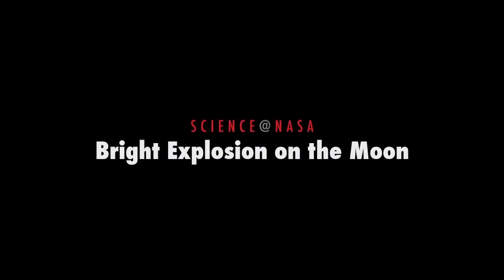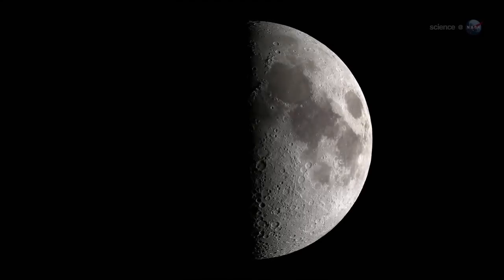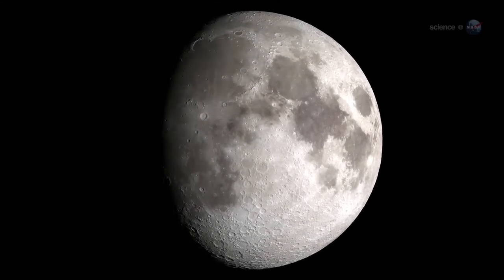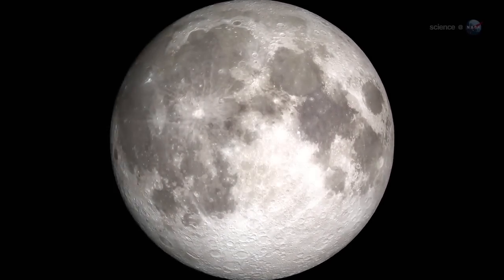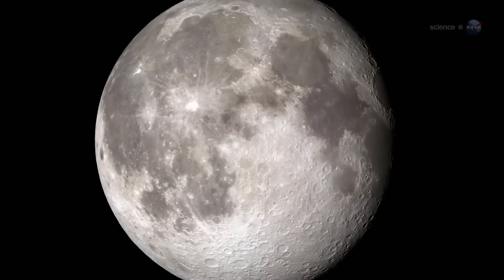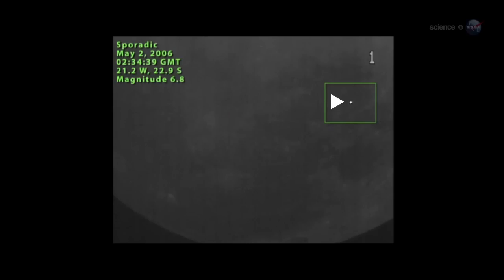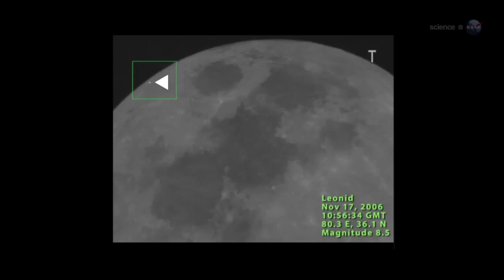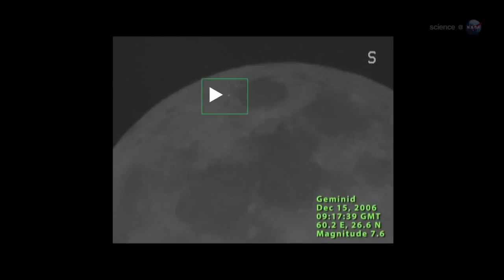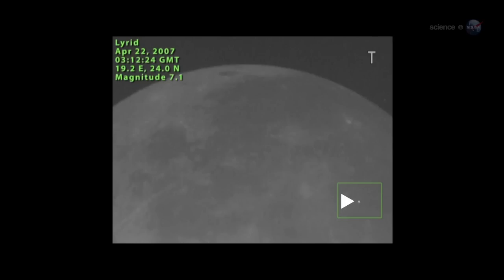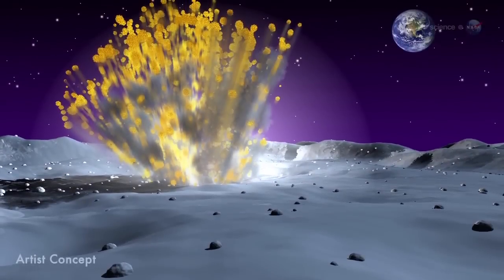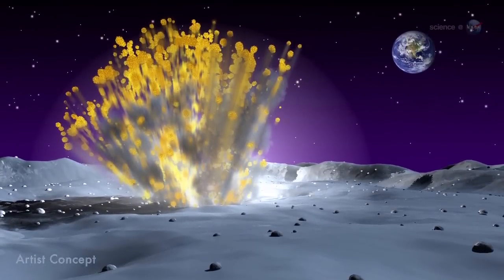Bright Explosion on the Moon, presented by Science at NASA. For the past eight years, NASA astronomers have been monitoring the Moon for signs of explosions caused by meteoroids hitting the lunar surface. Lunar meteor showers have turned out to be more common than anyone expected, with hundreds of detectable impacts occurring every year. They've just seen the biggest explosion in the history of the program.